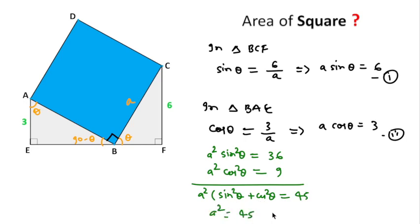And this gives 1, so we can write a squared equals 45. So area of this square is 45 unit square. So thanks for watching this video and please like, share, and subscribe this channel also.